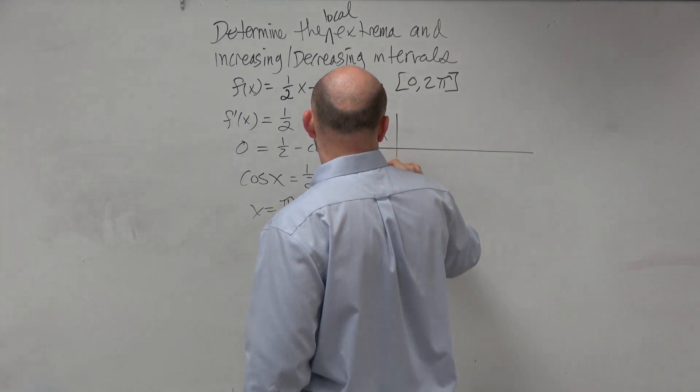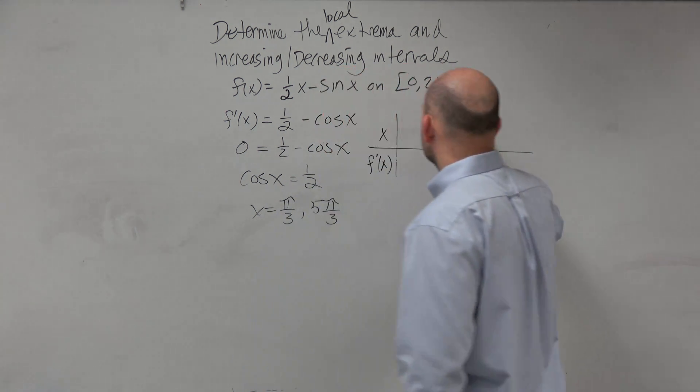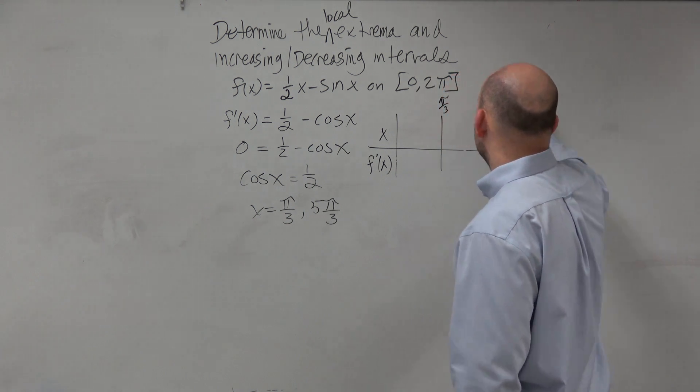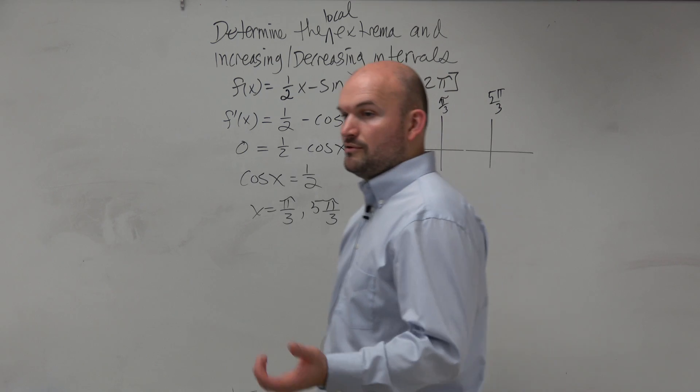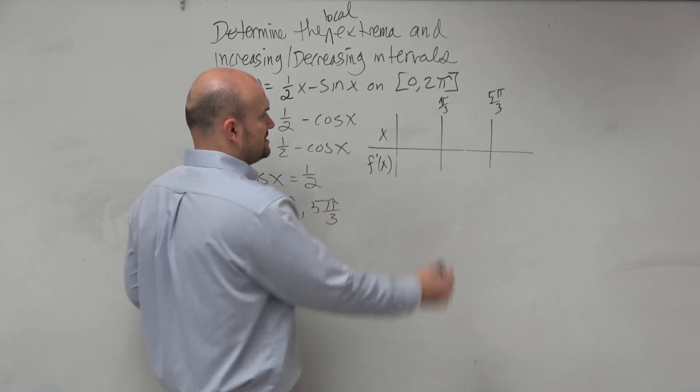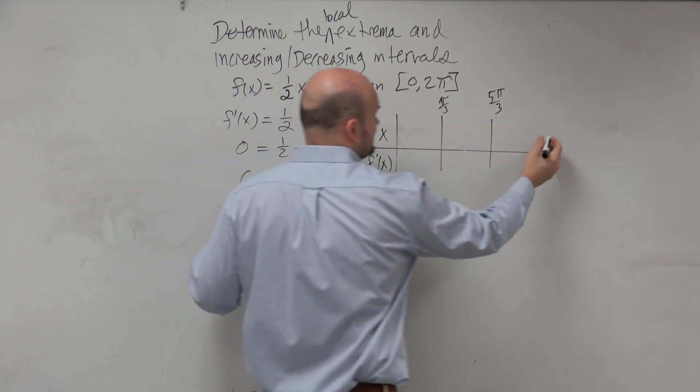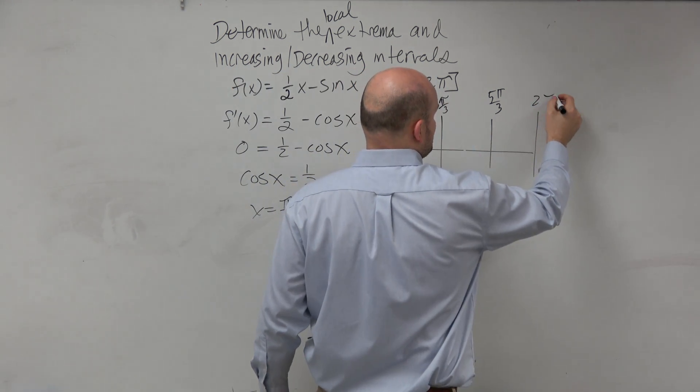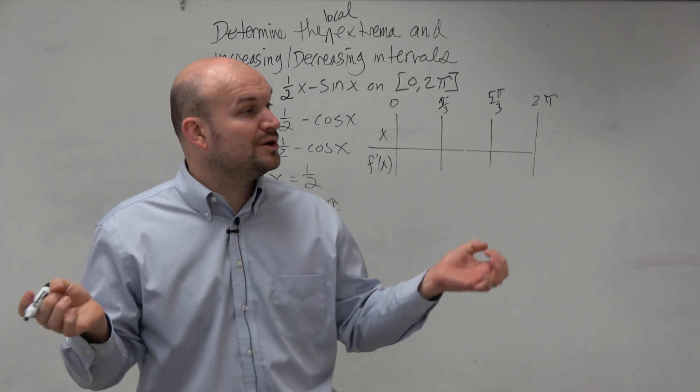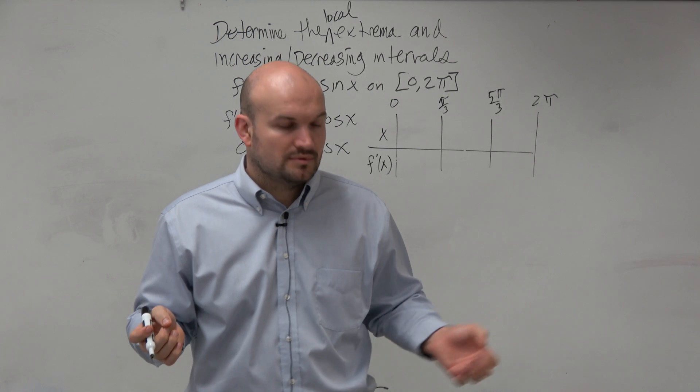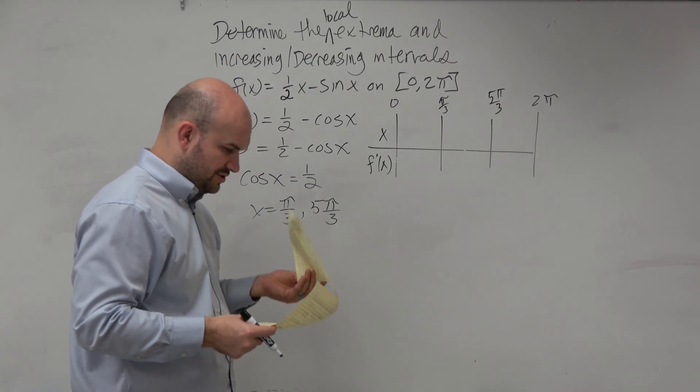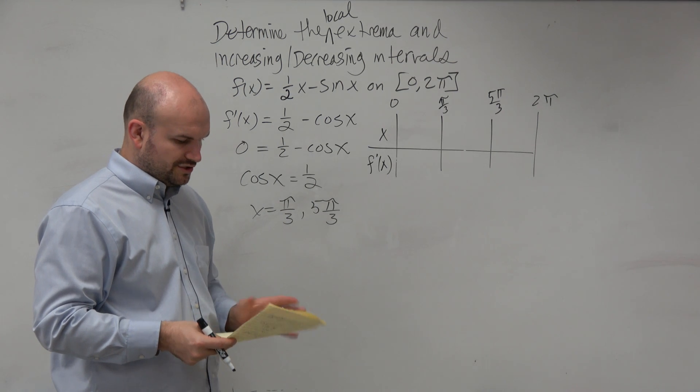So in this one, we're just going to do f and f prime of x. Our two points that we're going to check here are π over 3 and 5π over 3. So now what we want to do is check a point to the left and to the right of each of those. You can see our endpoints here is they're restricting it between 2π and 0. We know our endpoints cannot be our relative min or max. So we need to choose the points.